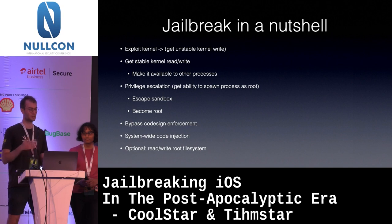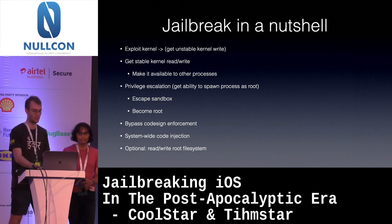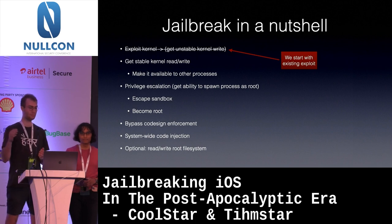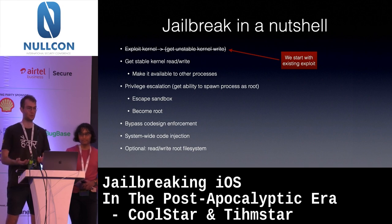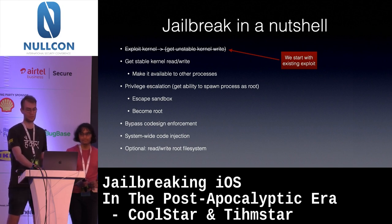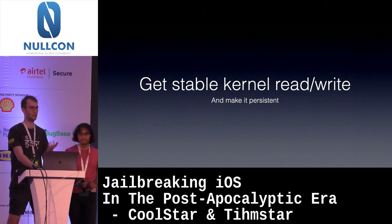Jailbreaking in a nutshell consists of the following things: you want to get a bug, exploit the bug, get an unstable kernel read and write. In this presentation, we already start with an existing exploit — we skip over all the exploitation and just do post-exploitation. So what you want to do is have stable kernel read and write. We assume the initial read/write is unstable. We want to make it available to other processes, do privilege escalation — usually starting from a sandbox process — escape the sandbox and become root, bypass code signing enforcement, do system-wide code injection, and optionally read/write to the root filesystem.